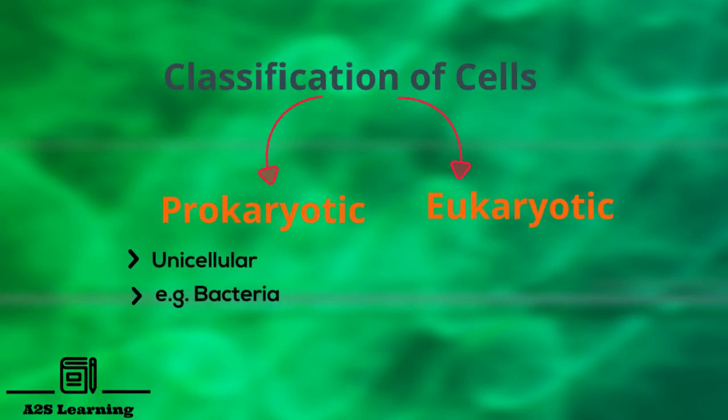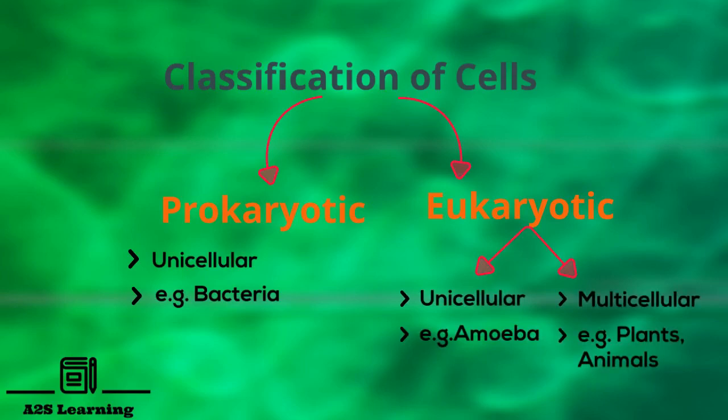Prokaryotes are unicellular organisms, for example bacteria, whereas eukaryotes can either be unicellular, for example amoeba, or multicellular organisms, for example plants and animals.